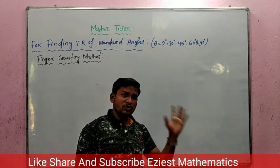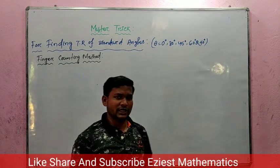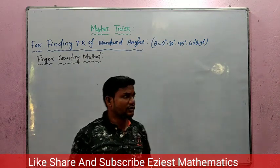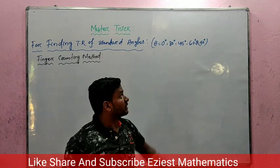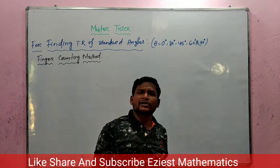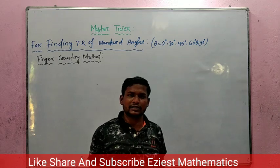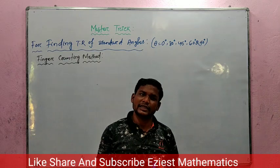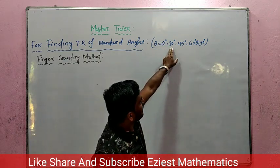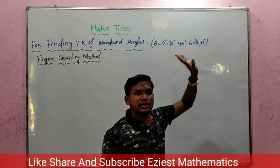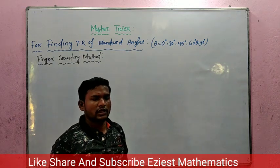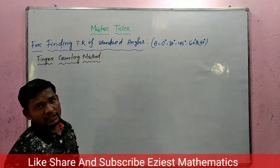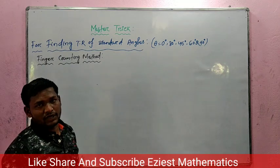I am going to tell you how to memorize the TR of standard angles. The standard angle values are 0, 30, 45, 60, and 90 degrees. TR means sin theta, cos theta, tan theta. These values can be found out easily because we have 0 degree, 30 degree, 45, 60, and 90 degree values. Today I will give you a super trick on how to memorize the above values.